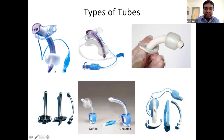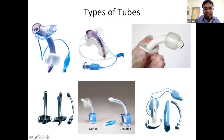Tracheostomy tube sizes range from size 2 to size 10. For metallic tubes, multiply the standard tube size by 4 to get the corresponding metallic number — so a size 7 tube corresponds to a size 28 metallic tube. Uncuffed tubes are used especially for children and for patients with no aspiration risk. When aspiration is not a concern, an uncuffed tube suffices.